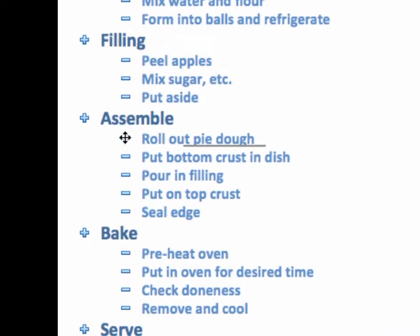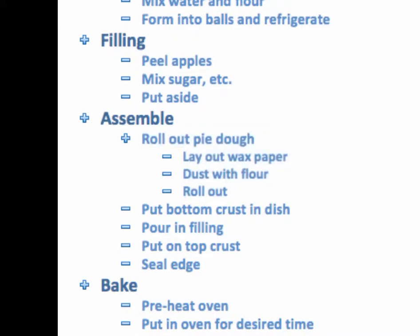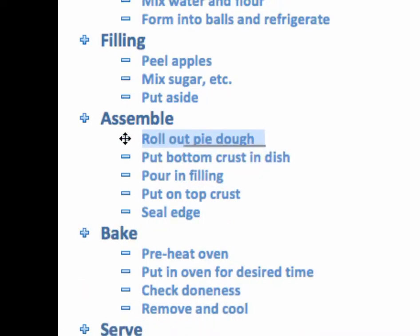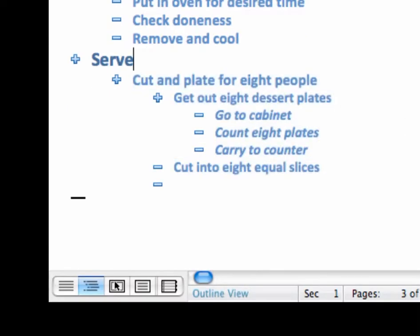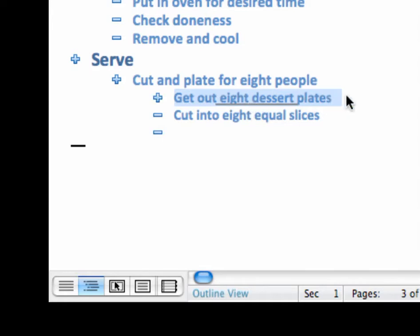Same thing with the filling. For assemble, roll out the pie dough. If you don't have a lot of experience, you might say lay out the wax paper, dust with flour, roll out. This can take a bit of time, so maybe you want to break it out — the roll out really takes about 15 minutes, so maybe just saying roll out pie dough is enough. Moving all the way down to serve: cut and plate for eight people, that's the task. I have to get out the dessert plates — it's not realistic to break it down further into go to cabinet, count eight plates, carry to counter. I'll just leave it at get eight dessert plates. Then I have to cut eight equal slices, put in plates, and I'm done.